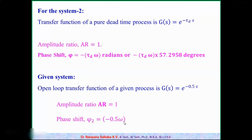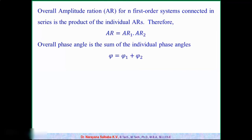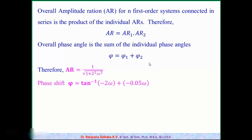The overall AR is the product of individual ARs: AR = AR₁ × AR₂ = 1/√(1 + 4ω²) × 1 = 1/√(1 + 4ω²). The overall phase is the sum: phi = phi₁ + phi₂ = tan⁻¹(−2ω) + (−0.5ω). So the total phase phi = tan⁻¹(−2ω) − 0.5ω.